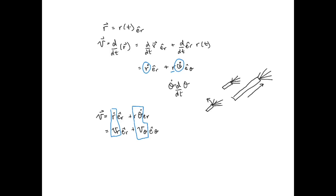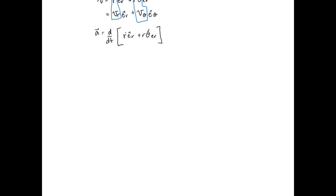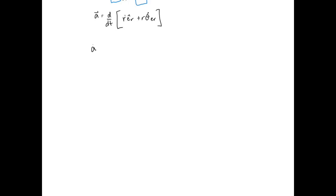For acceleration it's a bit more complicated. Acceleration is d/dt of the velocity expression, and it works out to: a = (r-double-dot minus r·theta-dot²) er + (r·theta-double-dot + 2·r-dot·theta-dot) eθ. The first bracket is the radial acceleration and the second is the angular (transverse) acceleration.